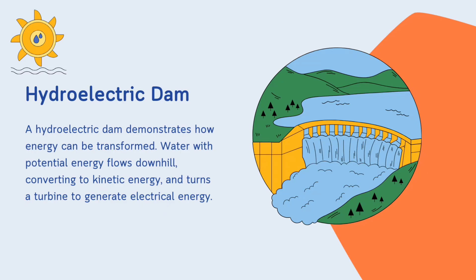The next example is the hydroelectric dam. A hydroelectric dam demonstrates how energy can be transformed. Water with potential energy flows downhill, converting to kinetic energy, and turns a turbine to generate electrical energy.